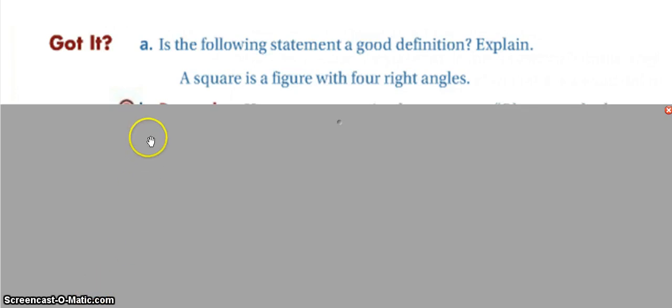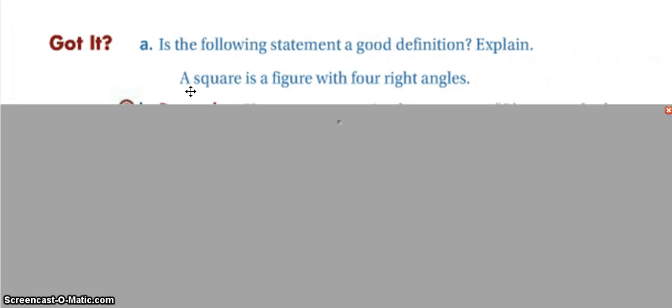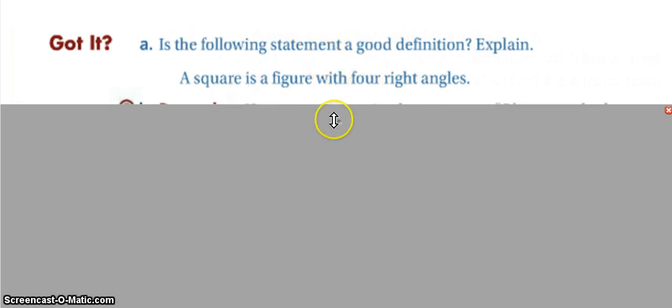For the 'got it' in part four: the definition given is 'a square is a figure with four right angles.' While this is true, reversing it gives 'a figure with four right angles is a square' — but a rectangle has four right angles and is not a square, so that is a counterexample. Therefore this definition is not a good definition and we cannot write a bi-conditional statement.